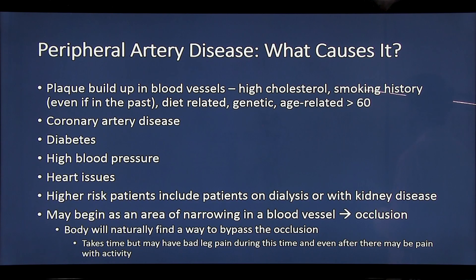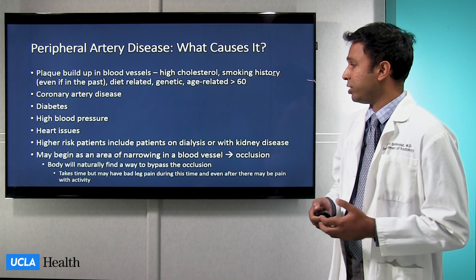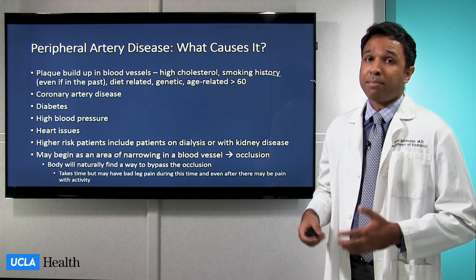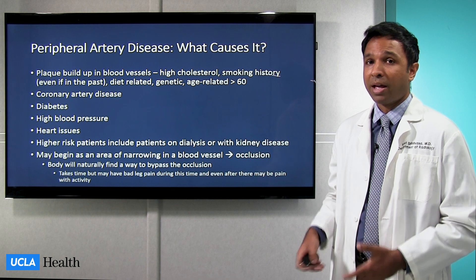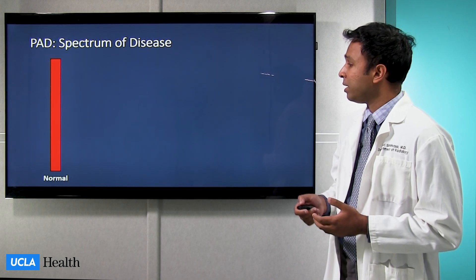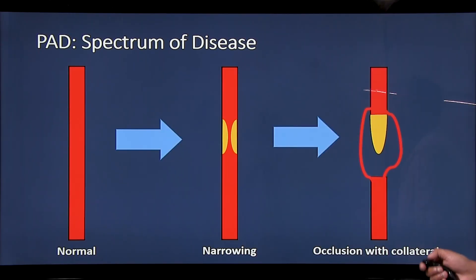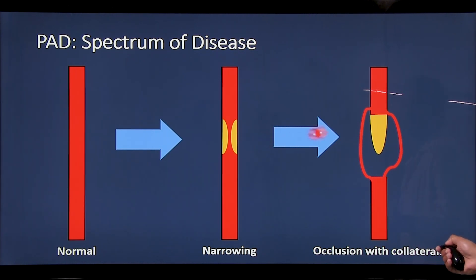These areas of narrowing within blood vessels typically start as a very focal area of narrowing. Over time, this eventually progresses to a complete occlusion. Typically the body finds a way to get blood flow around this occlusion — collaterals will develop and the blood flow will find a way to get around that blockage. This can take time, and as a result, you may be miserable with leg pain or difficulty walking until the collaterals develop. Here's a schematic showing the spectrum of disease: on the left, a normal blood vessel; in the middle, an area of atherosclerotic plaque buildup; and on the end, a complete occlusion with development of collateral vessels.